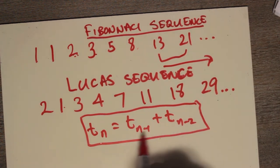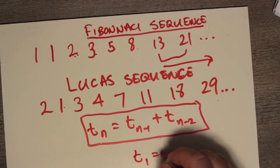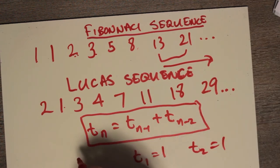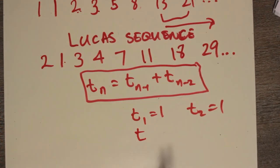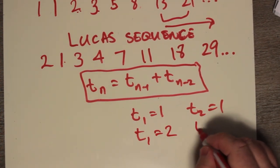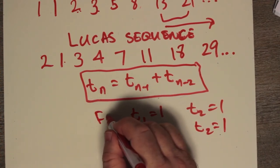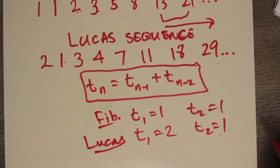Because this requires two previous terms. So you have to let me know that t1 equals 1 and t2 equals 1. And that will give me the Fibonacci sequence. Or that t1 equals 2 and t2 equals 1. And this will give me the Lucas sequence. So this is Fibonacci. This is Lucas.